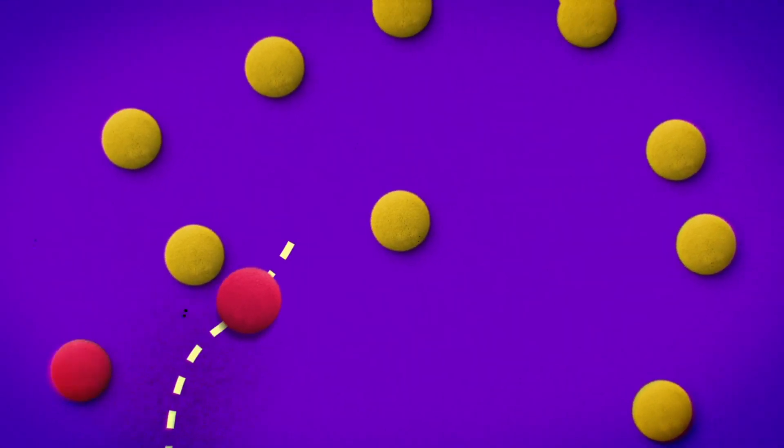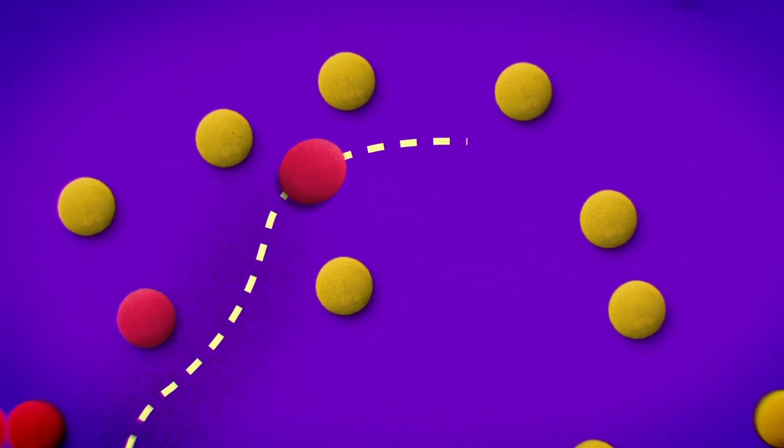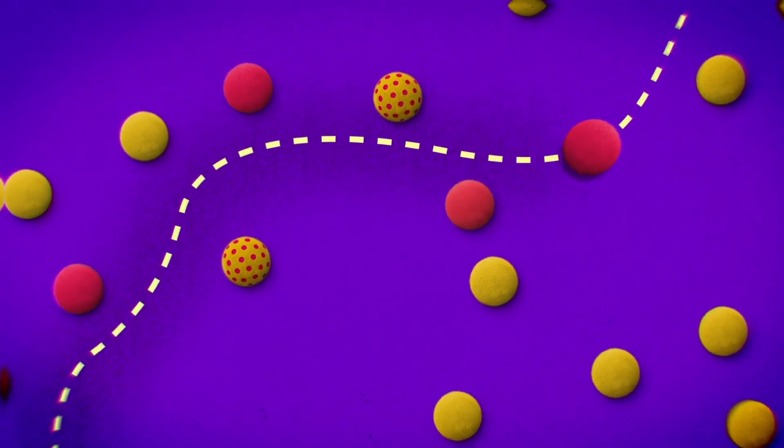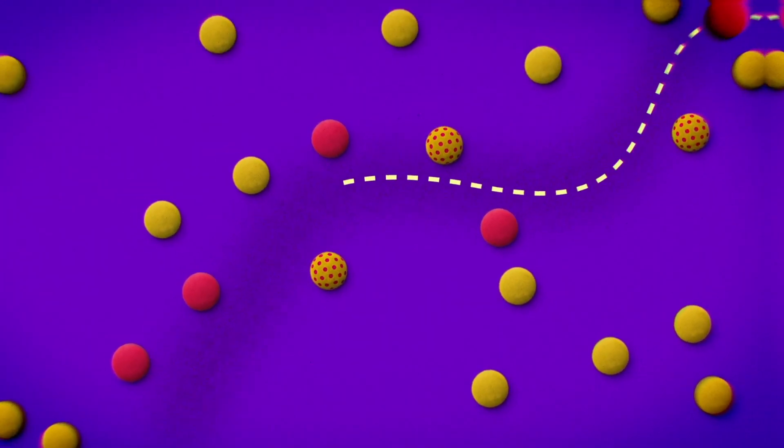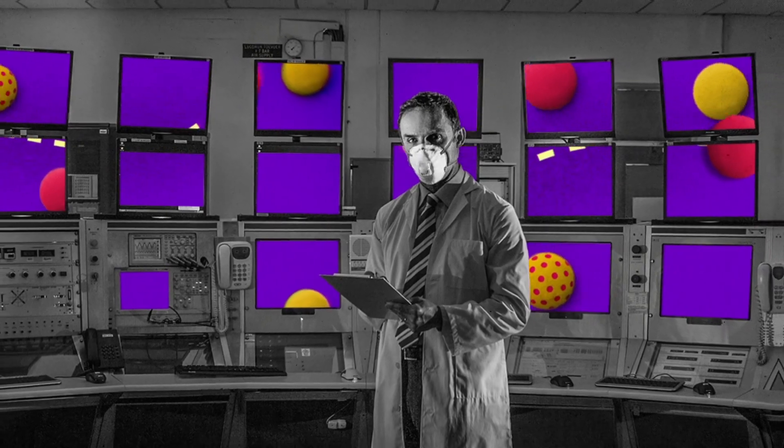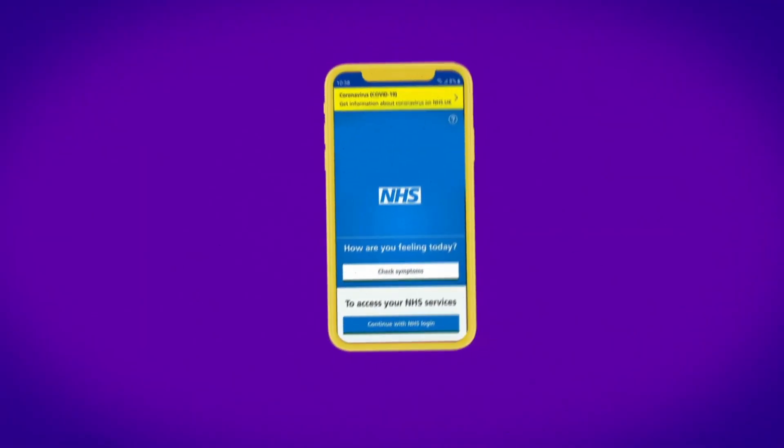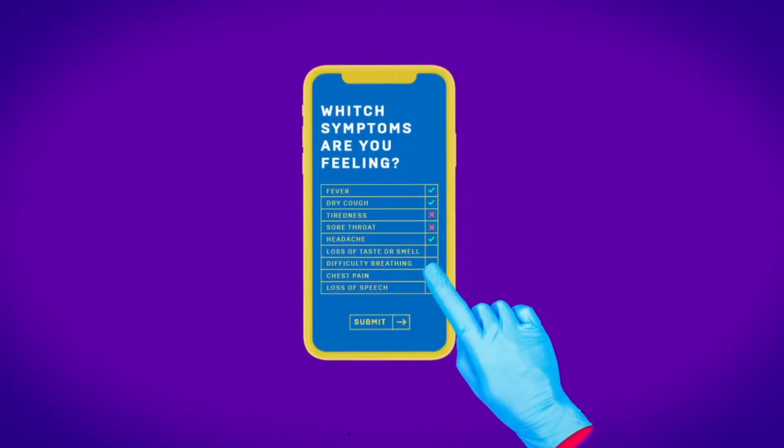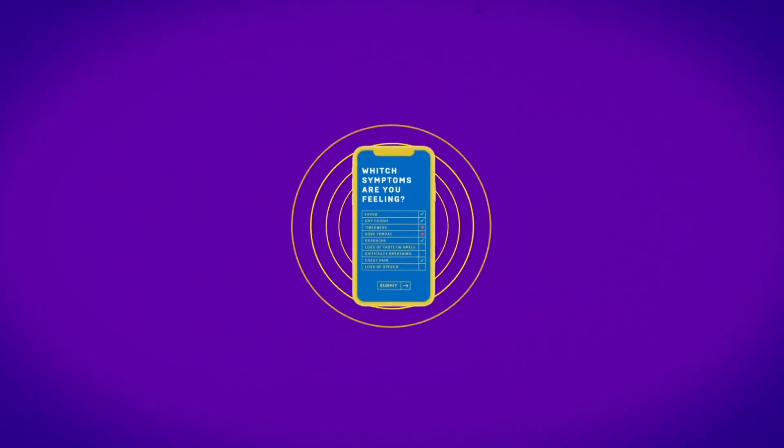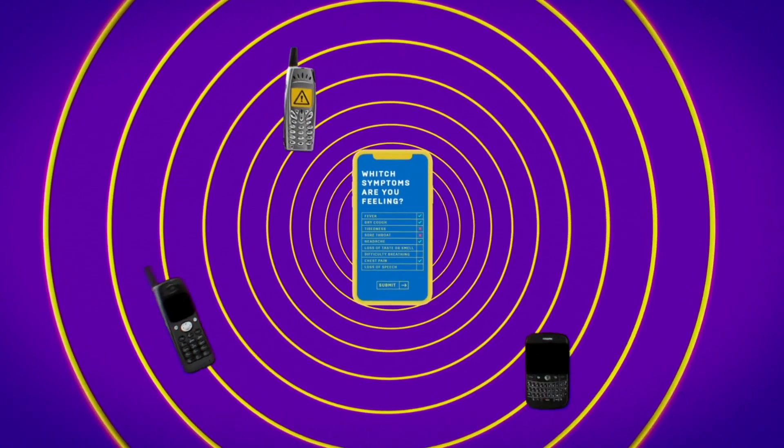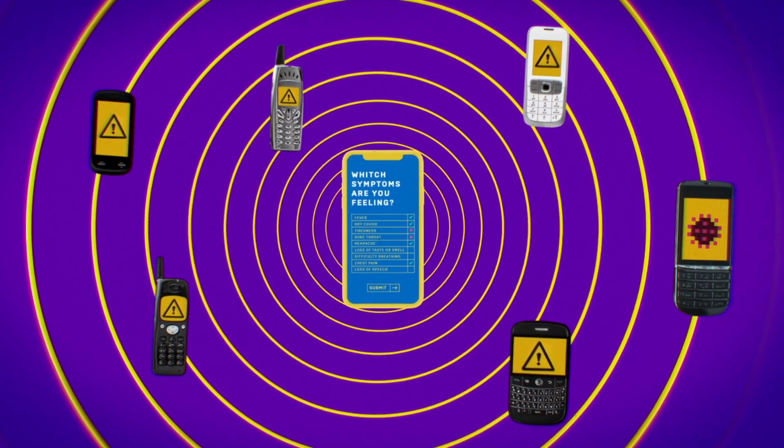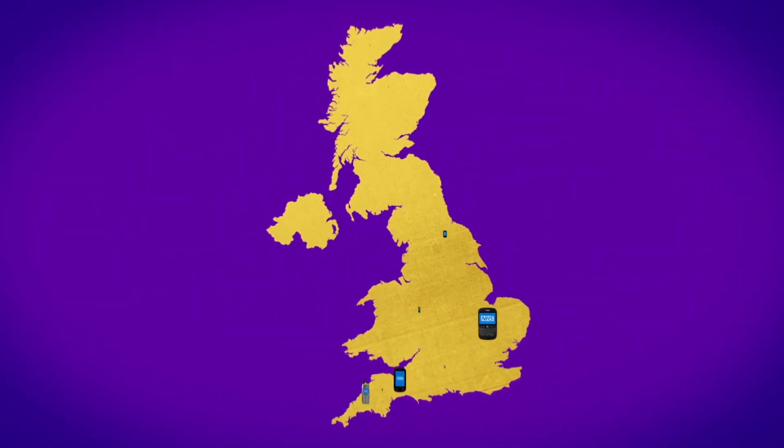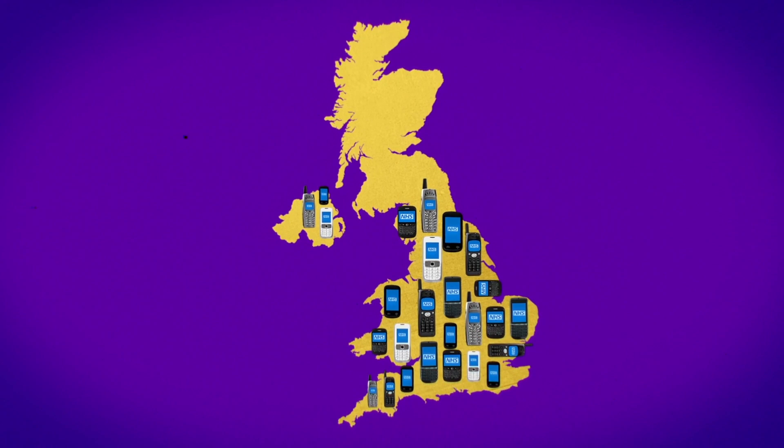But contact tracing isn't simple. It requires people remembering everybody they've come into contact with since they contracted the infection. And some people don't even show symptoms at all. To make the NHS's job of contact tracing easier, the government has developed an app. It means that if you become ill with coronavirus symptoms, you can self-report your symptoms to the app. The app then anonymously alerts other app users that someone with symptoms has been in close proximity to them in the past two weeks. But at least 60% of the population will need to use the app for it to be effective.